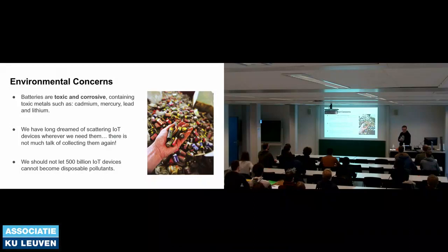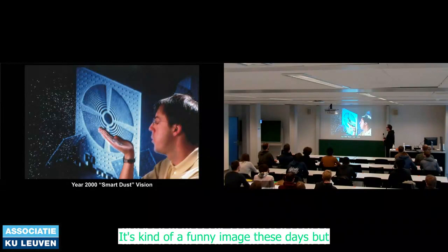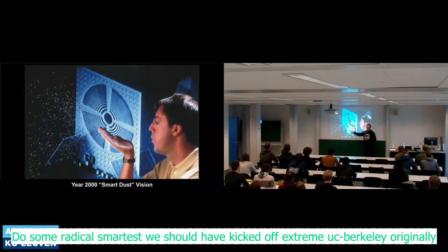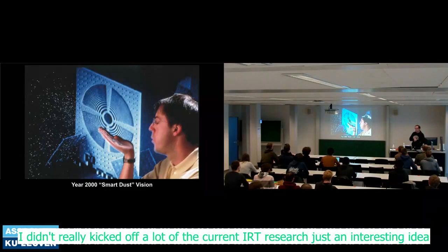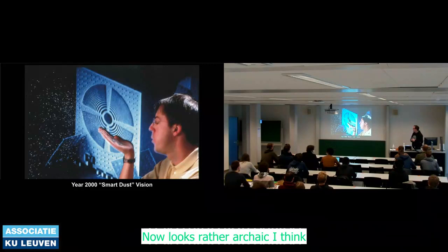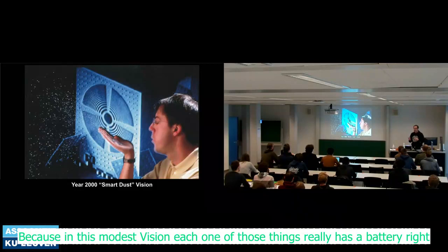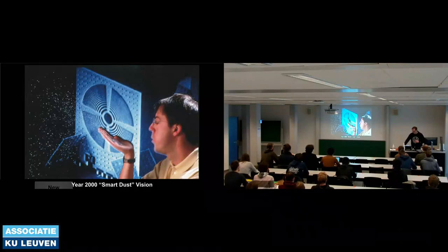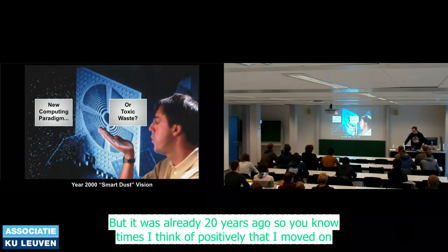Back around the 2000s there was an idea called 'smart dust,' originally kicked off at UC Berkeley, which really started a lot of current IoT research. The idea was: what if you could build a computer so small it could be scattered arbitrarily in the environment? It looks rather archaic now, because in the smartest vision each one has a battery, so you'd just be throwing toxic chemicals around. Times have positively moved on.